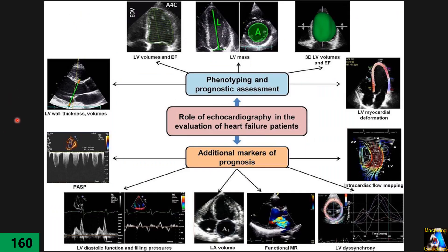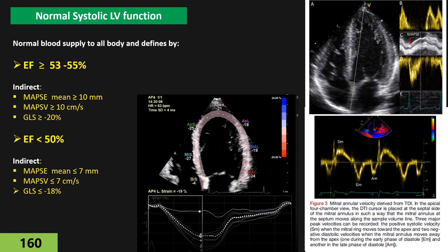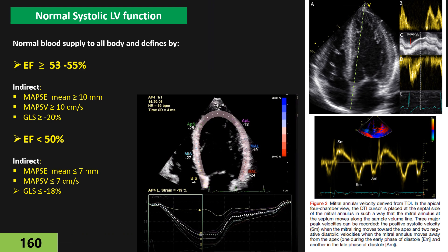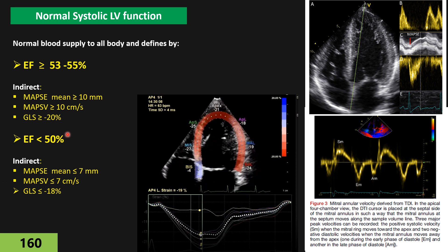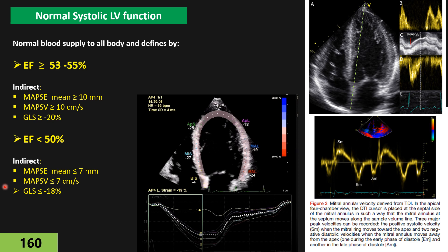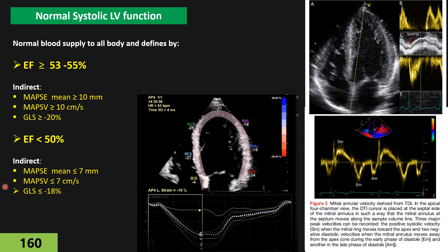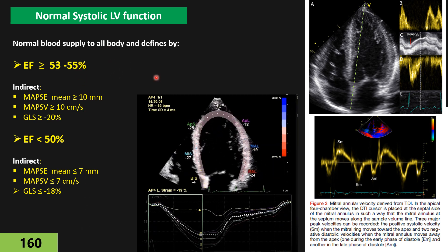Echocardiography is the first-line and most important tool for diagnosis, classification, evaluation, and follow-up of heart failure — especially with new technology: 3D, strain echo, and intracardiac flow mapping. It gives us the best information for this purpose. The first step in evaluating left ventricular systolic function is measuring ejection fraction, the easiest and most reliable parameter for evaluating myocardial contraction and systolic function, which we can do by 2D, 3D, or strain echo.